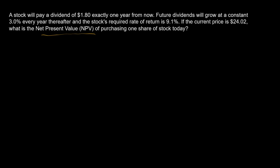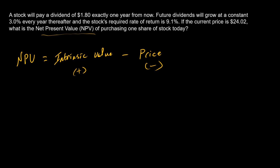With NPV, we just need the present value of all inflows less the present value of all outflows. For a stock, that's going to be our estimate of the stock's intrinsic value, net of the current market price. The intrinsic value is the present value of the inflows, and the price is the present value of outflows — that's something you will pay for the stock. So we simply need to use our stock valuation techniques to estimate this quantity.